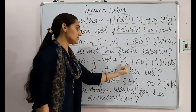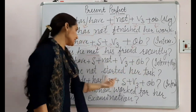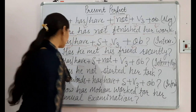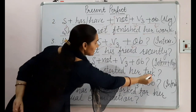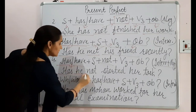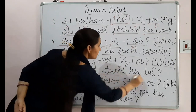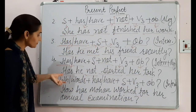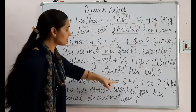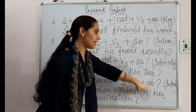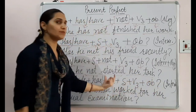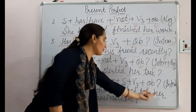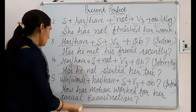The fourth formation combines interrogative and negative: has/have + subject + not + third form of verb + object. For example: 'Has he not started her task?' Here the helping verb comes first, then the subject, then 'not', then the third form of the verb, then the object. The last formation uses a wh-question word: wh-word + has/have + subject + third form of verb + object. For example: 'How has Mohan worked for his annual examination?'